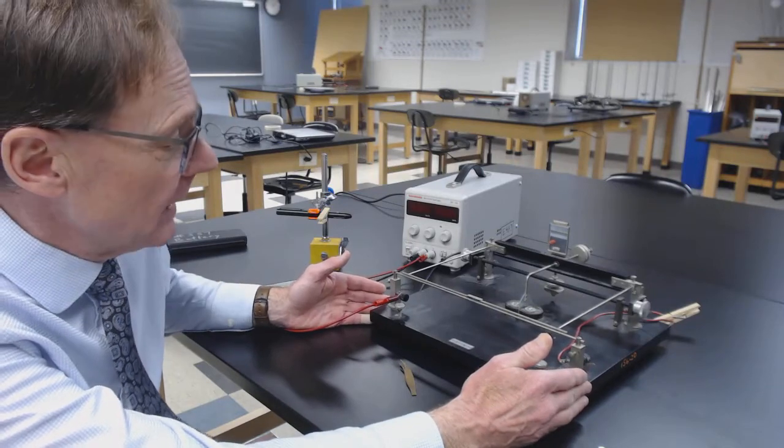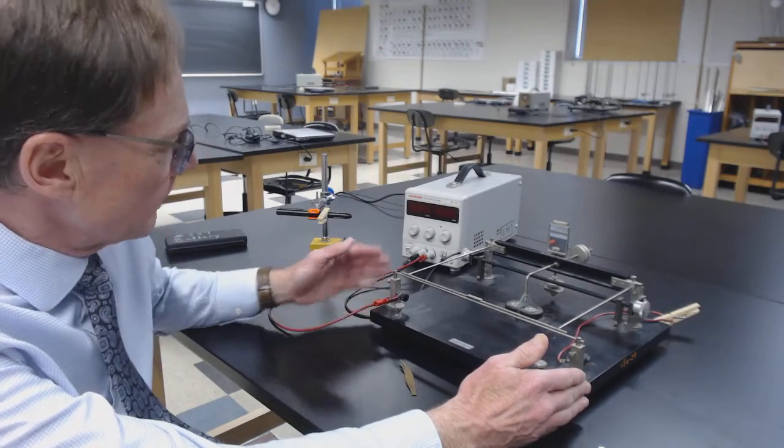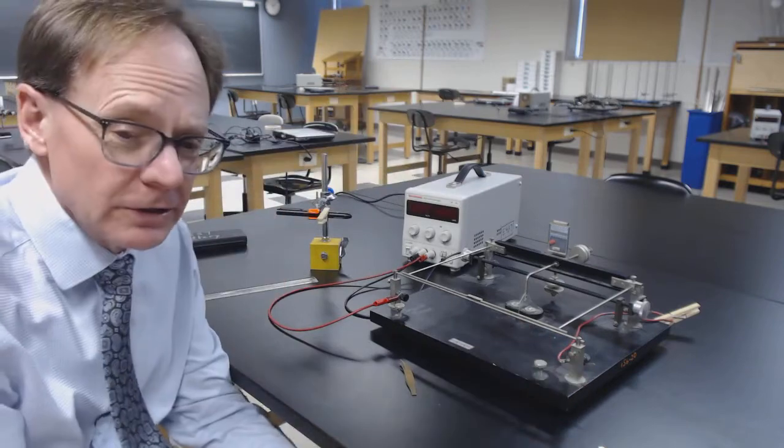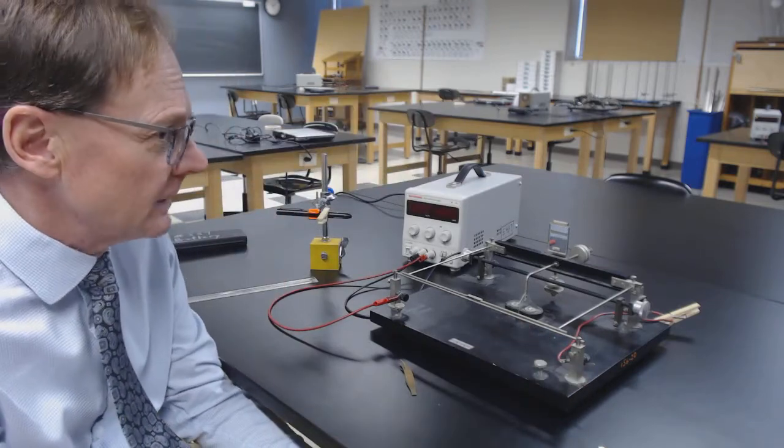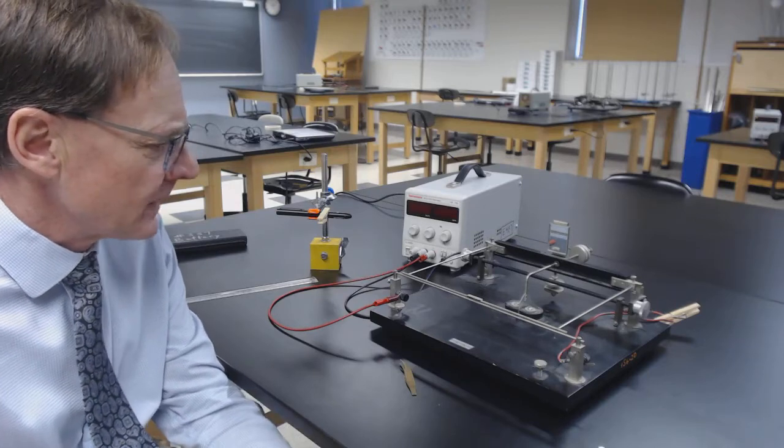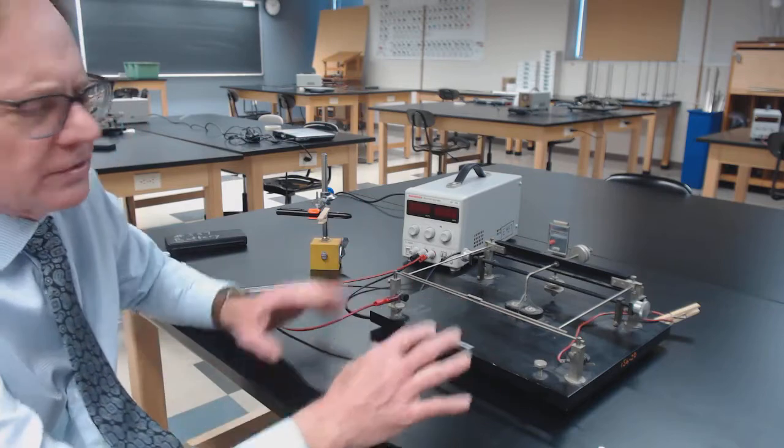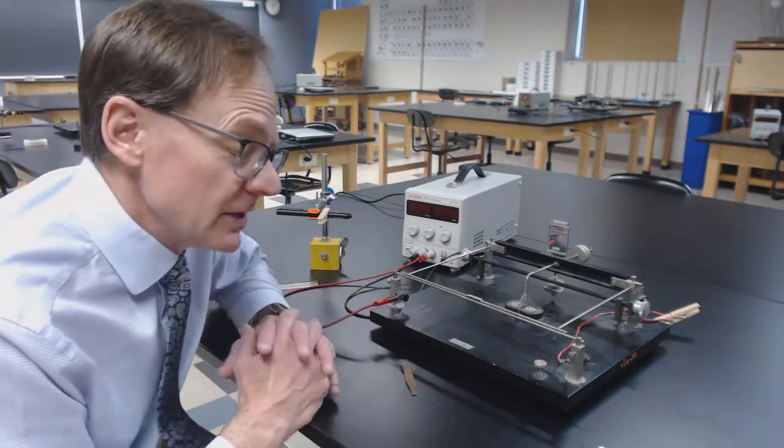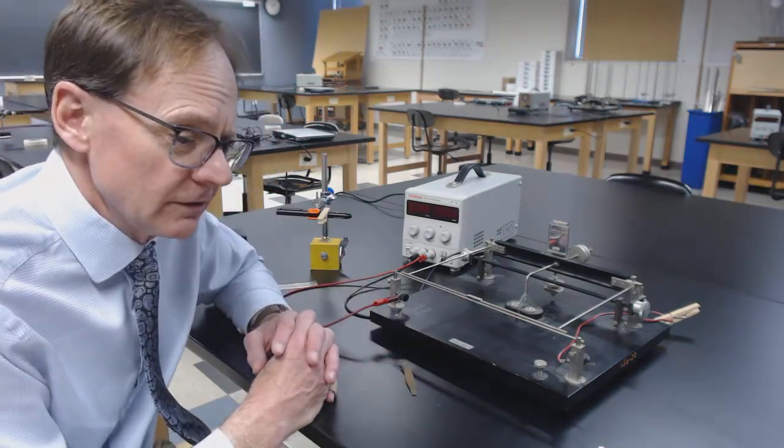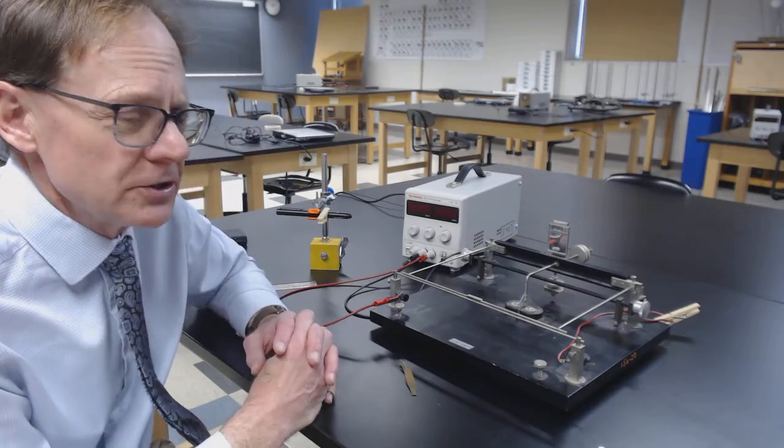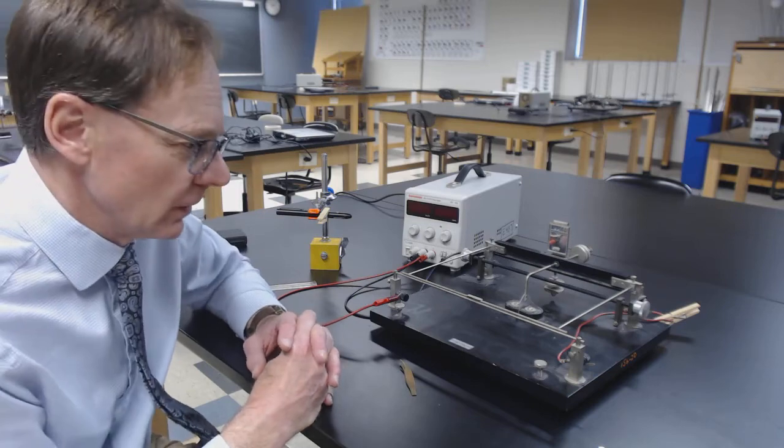This is our current balance apparatus that we're going to use. We're going to provide current with this power supply, like the same supply we've been using for a few weeks now. The first thing we want to do is a calculation to make sure you know how to derive the expected relationship between magnetic force and the current.